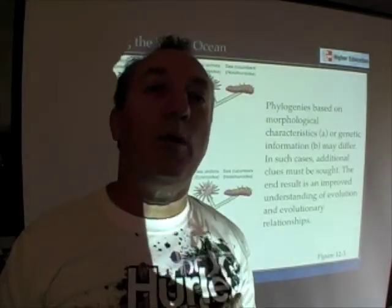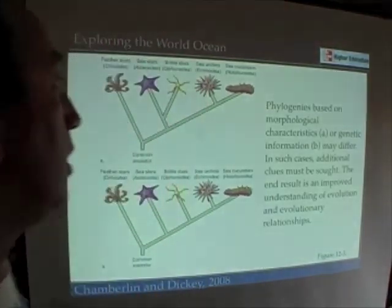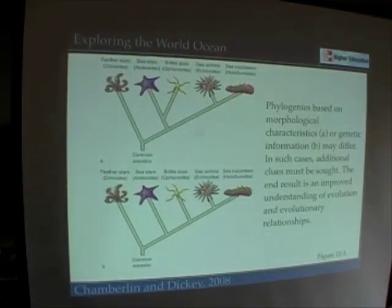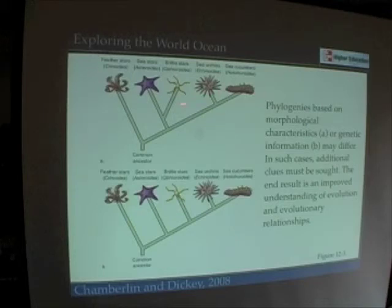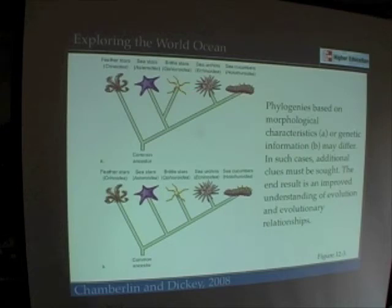We can do that with all forms of life. When we do so, we can produce what's called a phylogenetic tree to look at the relatedness between different organisms. Here we have a phylogenetic tree for different kinds of echinoderms: sea cucumbers, sea urchins, brittle stars, sea stars, and feather stars, all of which are related to each other in different ways.